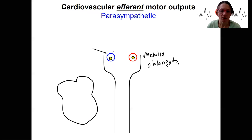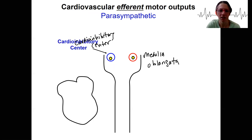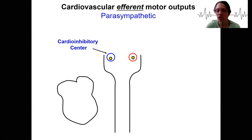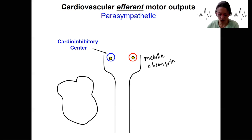— the medulla oblongata in the brainstem. So this is the brainstem; these are nuclei here, bundles of cell bodies. This one in blue is parasympathetic and can control the parasympathetic nervous system. This is called our cardioinhibitory center — that name kind of makes sense. The cardioinhibitory center is just a region in the medulla oblongata, not the adrenal medulla. Medulla can mean the middle of something; in this case it's part of the brainstem.